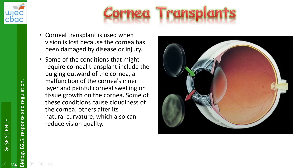The cornea is the clear transparent disc at the front of the eye and can sometimes get scratched in accidents. You can have a corneal transplant when vision is lost because the cornea has been damaged by disease or injury. Some of the conditions that might require a corneal transplant include the bulging outwards of the cornea.